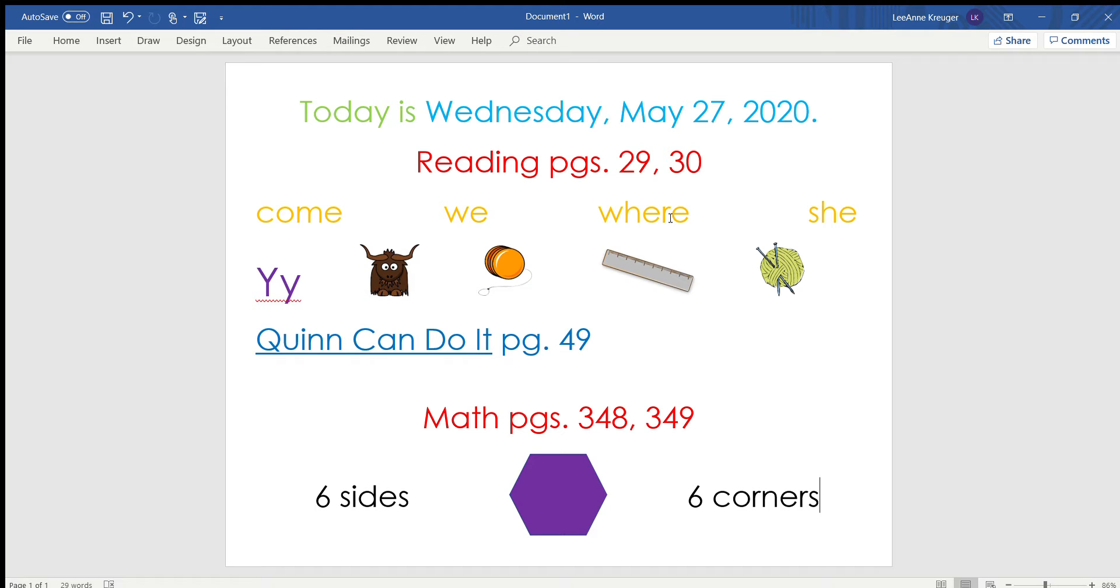Y says 'yuh', so you have a yak, yo-yo, that's a yardstick, and some yarn. So you'll write a Y for those pictures on page 29. And on page 30, they're asking you to write a sentence using at least one word that begins with Y.